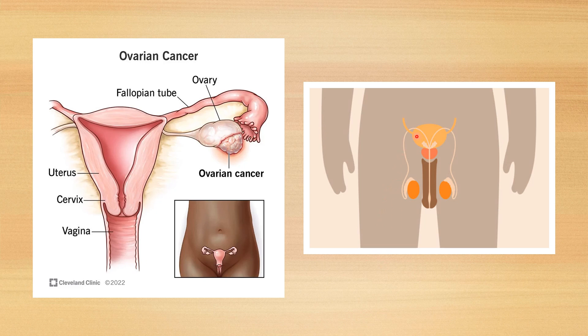The scrotum is a sac that keeps the testis at about 2 to 3 degrees centigrade below the core body temperature. This external sac, created outside the abdomen, helps to keep the testis cooler than the core temperature of the body, because this lessening of temperature is highly favorable for spermatogenesis — one of the most important functions of the testis. So for spermatogenesis to happen, we need a lesser temperature.